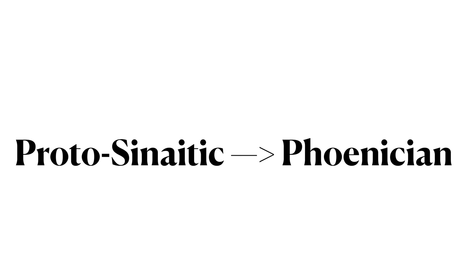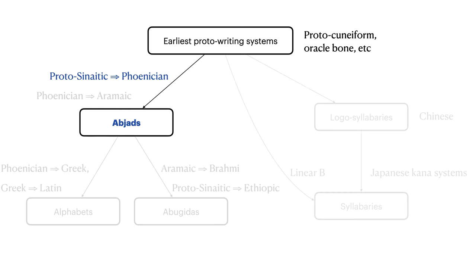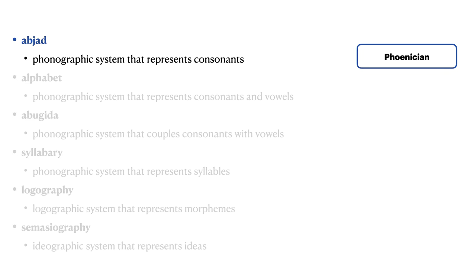The Phoenician writing system was derived from the Proto-Sinaitic writing system, which in turn was derived from ancient Egyptian hieroglyphs. In our historical tree of writing systems, we see that Proto-Sinaitic led to Phoenician, both of which were abjads. An abjad is a phonographic writing system that represents consonants.